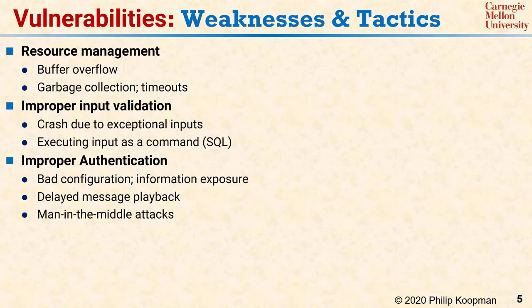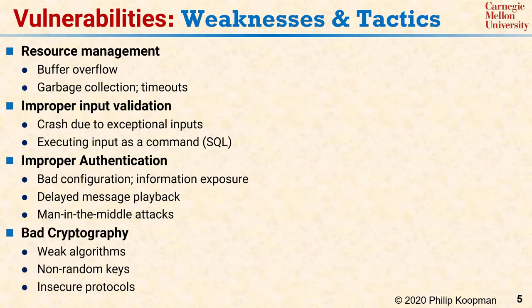Usually, when cryptography is compromised, it is because of a bad cryptographic approach, such as using outdated, homegrown, or bad cryptographic algorithms, poorly randomized secret keys, or insecure cryptographic protocols. There are many potential cryptographic weaknesses, and it's important to get this right by looking to experts to help with cryptographic algorithms and protocols.